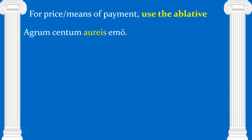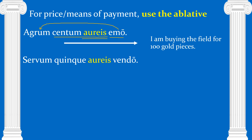The last thing we'll be using numbers for is to talk about price — we'll talk about time in a much later lesson. For price or means of payment, we use the ablative. Emo means 'I buy.' What is it that I buy? I buy agrum — a field. How much am I buying that field for? I'm buying it for centum aureis — 100 gold pieces. This is the only unit of measurement we need for now — and this is its ablative form.